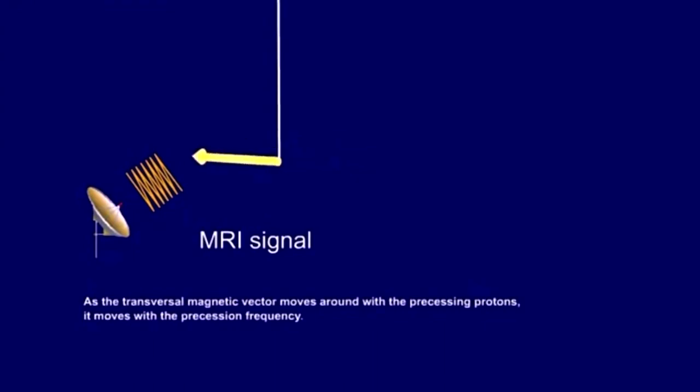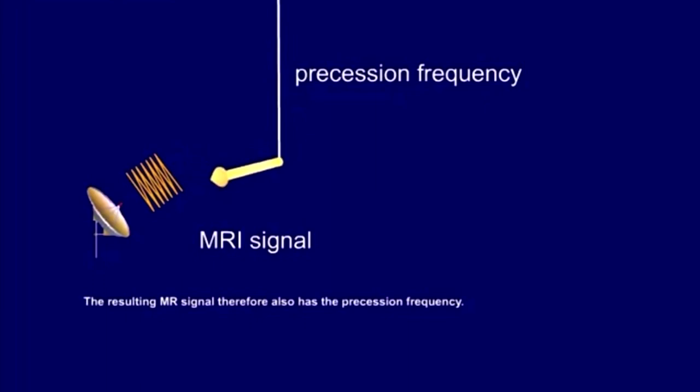As the transversal magnetic vector moves around with the precessing protons, it moves with the precession frequency. The resulting MR signal, therefore, also has the precession frequency.